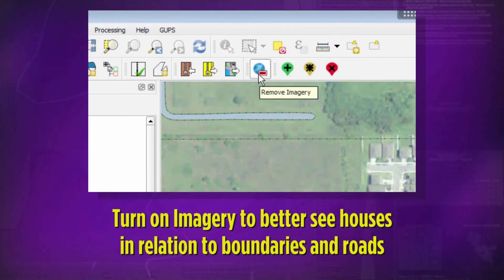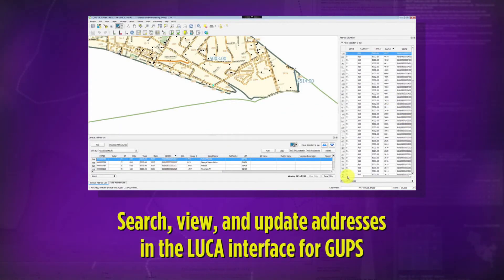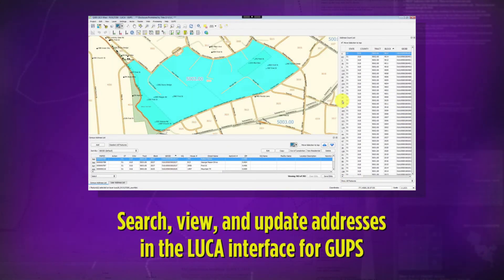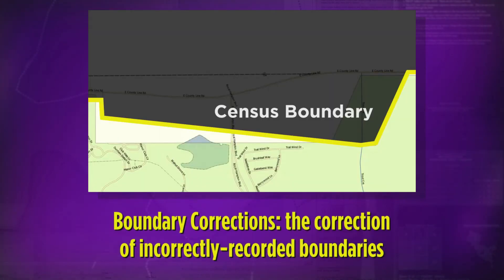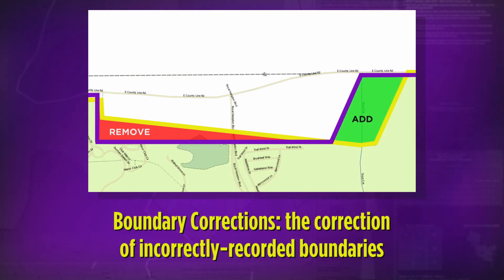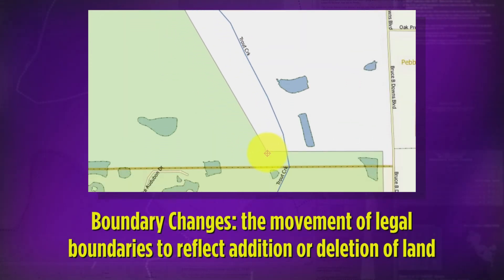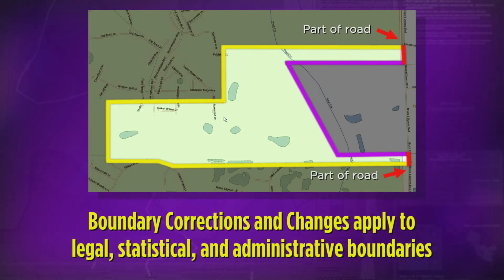Turn on imagery in GUPS to better see houses in relation to geographic data, such as boundaries and roads. The LUCA interface for GUPS allows users to search, view, and update addresses. In BAS GUPS, participants can update linear features, for example, adding roads. GUPS allows users to make boundary corrections, which are the correction of incorrectly recorded boundaries. Users can also make boundary changes, the movement of legal boundaries to reflect addition or deletion of land.